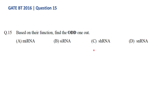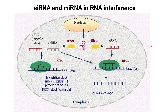Hello all. We are looking at question number 15 from GATE Biotechnology 2016 paper. The question is: based on function, find the odd one out. Option A: miRNA, option B: siRNA, option C: shRNA, and option D: snRNA. Let's learn about the functions of these RNA molecules to answer this question.